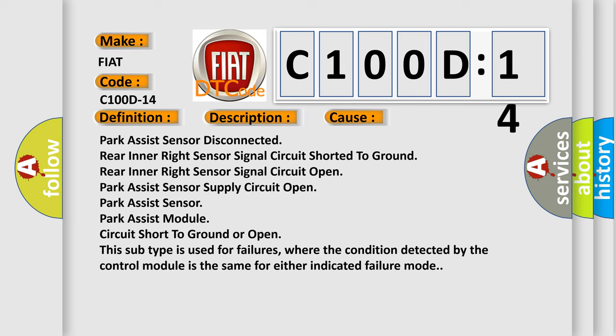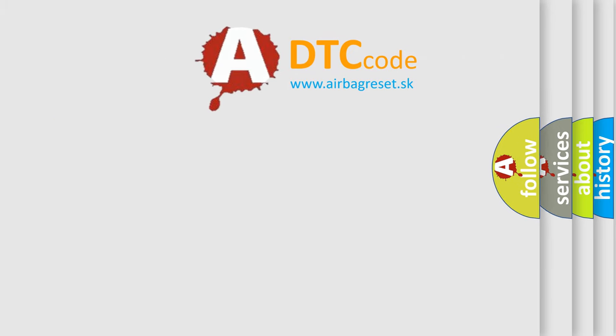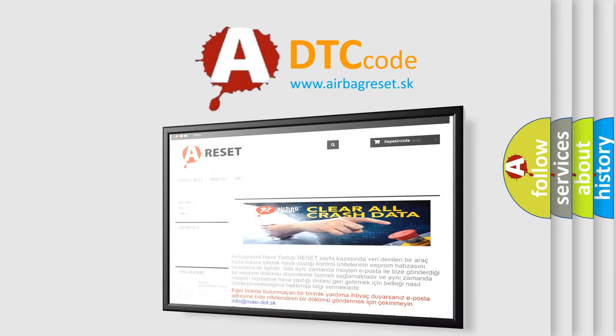Park Assist module, circuit short to ground or open. This subtype is used for failures where the condition detected by the control module is the same for either indicated failure mode. The airbag reset website aims to provide information in 52 languages. Thank you for your attention.